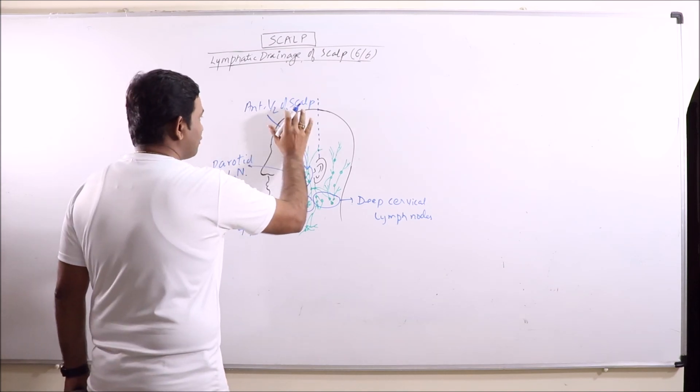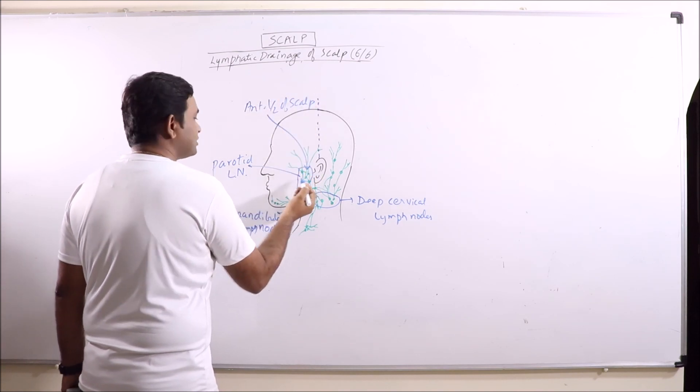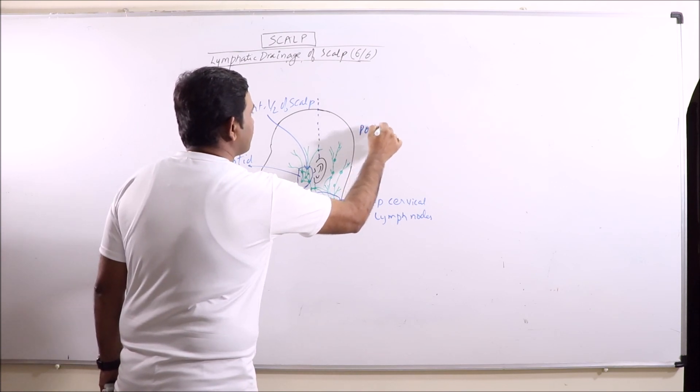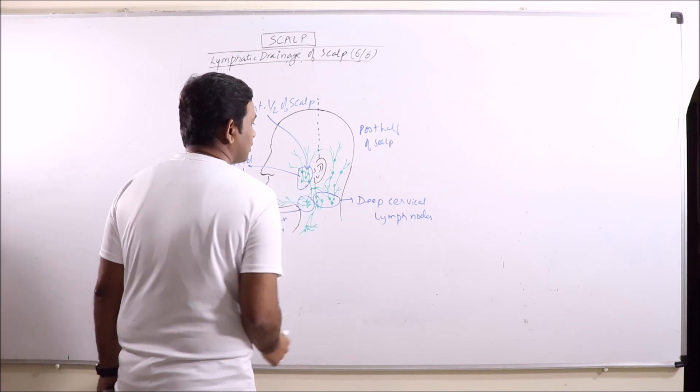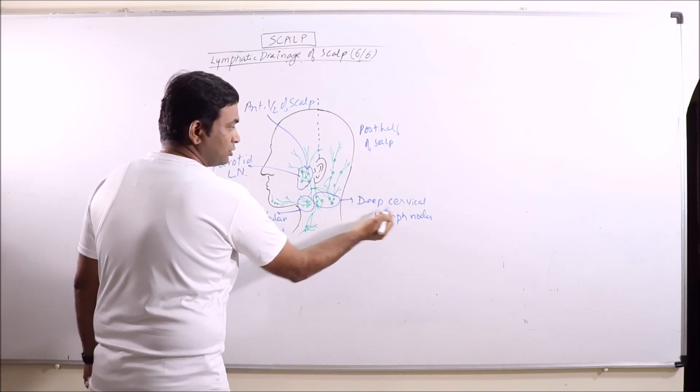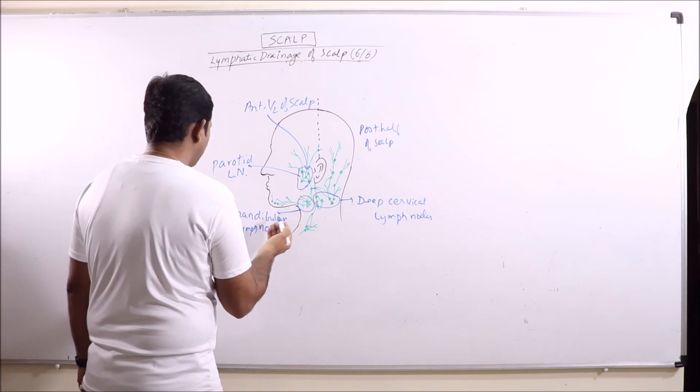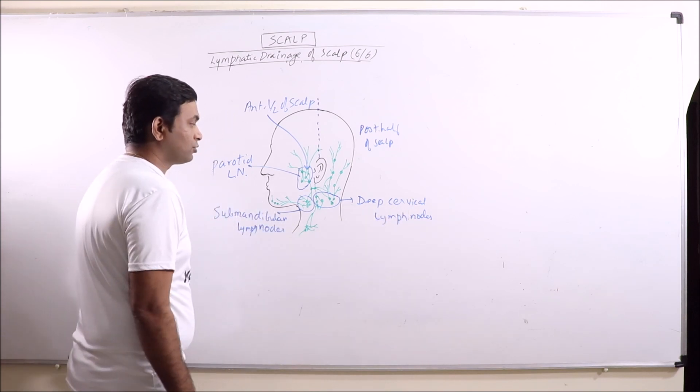So, the entire half of the scalp, lymphatic drainage from the entire half enters the parotid lymph nodes while the posterior half of the scalp drains into the deep cervical lymph nodes. And the parotid lymph nodes also finally drain into submandibular lymph nodes and the deep cervical lymph nodes.